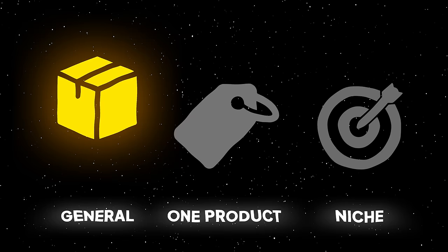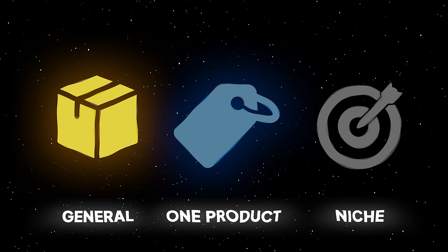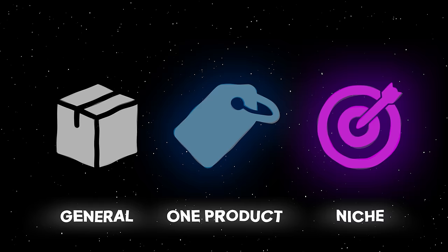After you find the product that you want to start selling, it's time to build the store. Regarding the store building stage, there are three different types of stores that you can create: a general store, a one-product store, and a niche store. A general store is a store with many different products, which is great if you want to test multiple products at the same time. A one-product store consists of only one product. A niche store consists of products around one specific product category, for example pet or kitchen products.